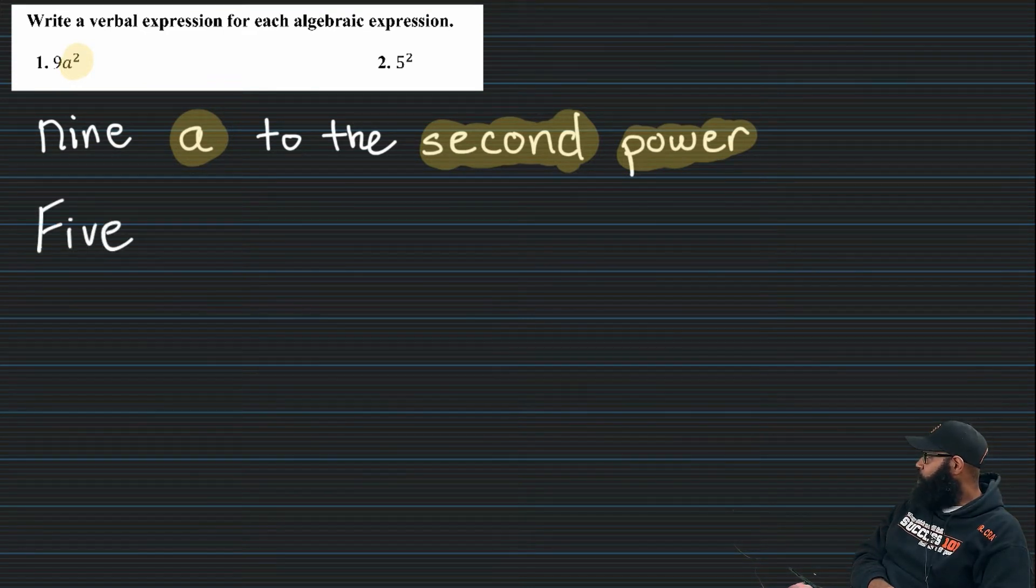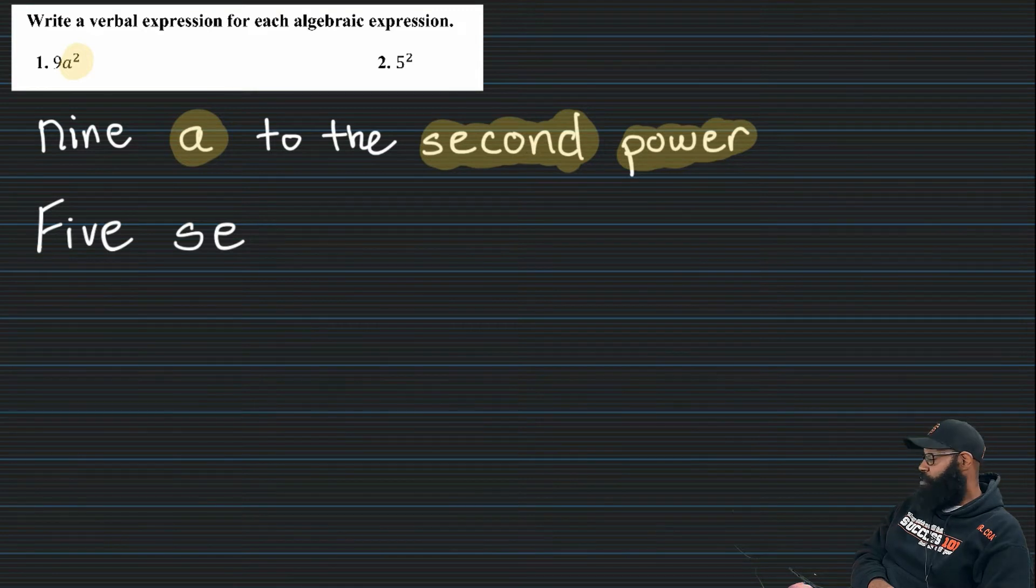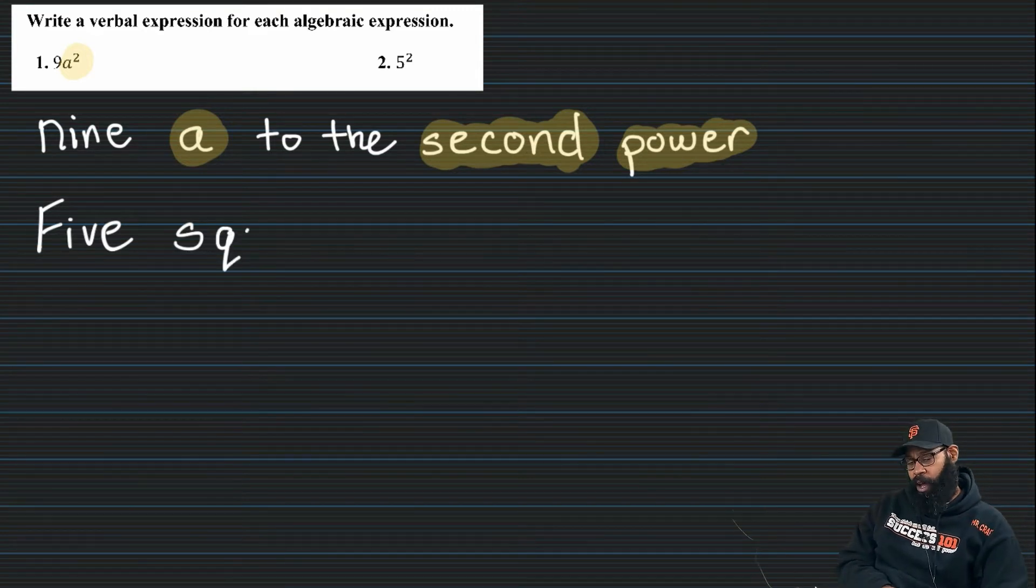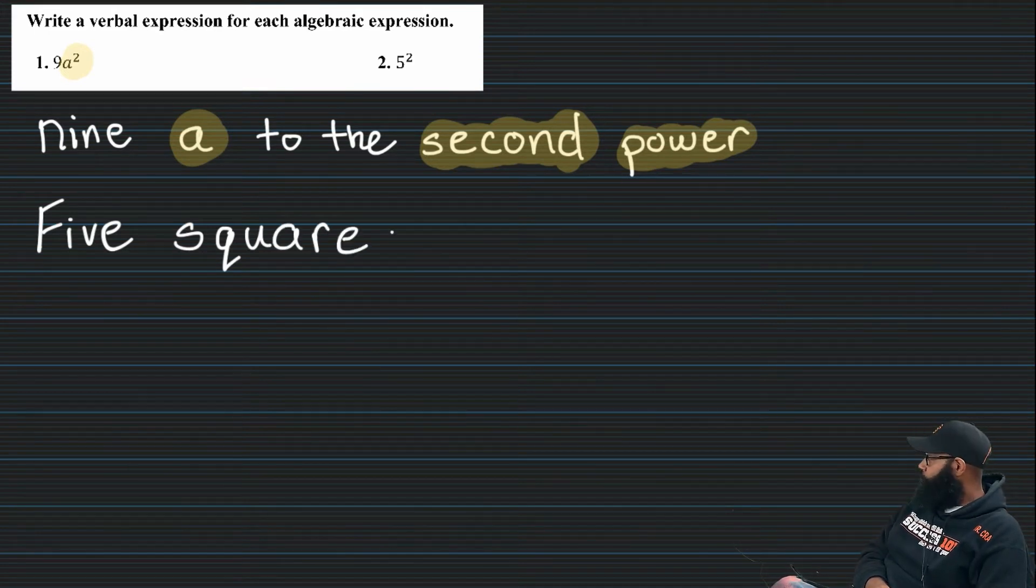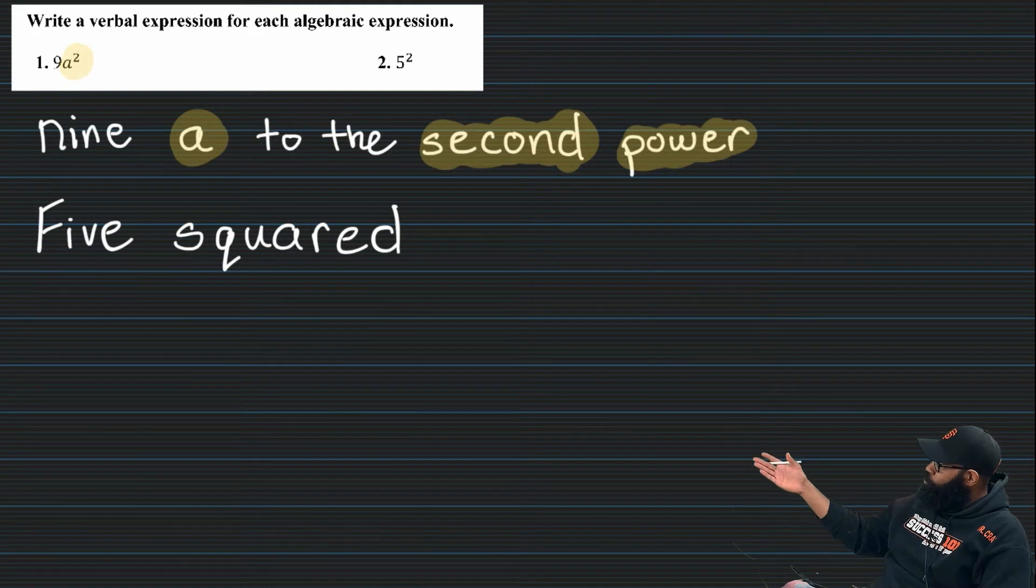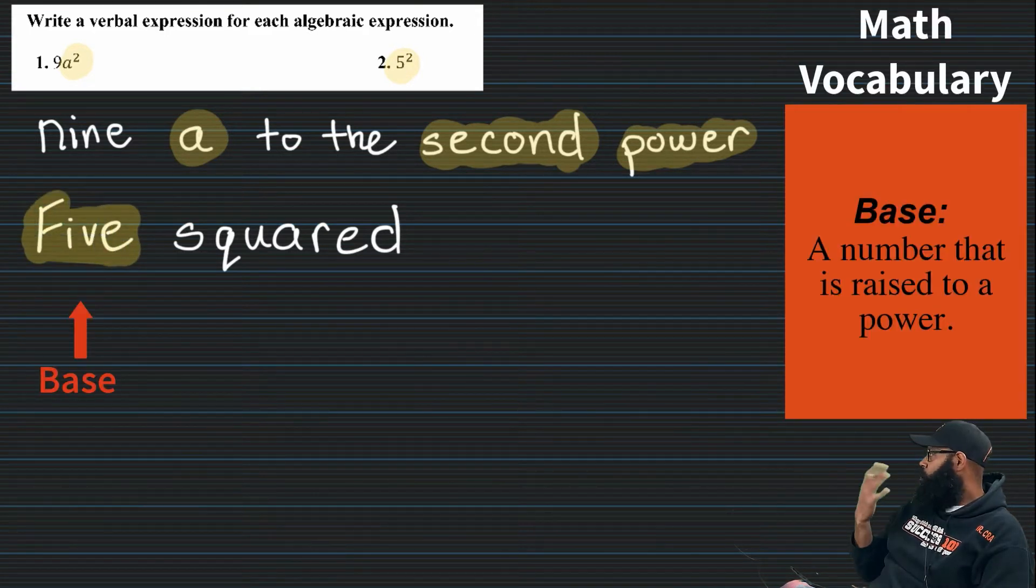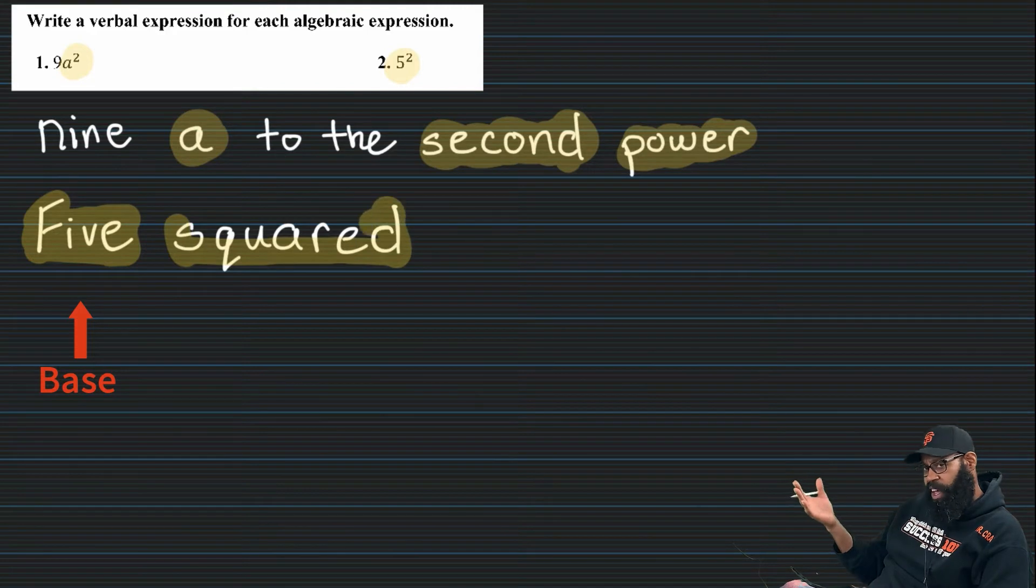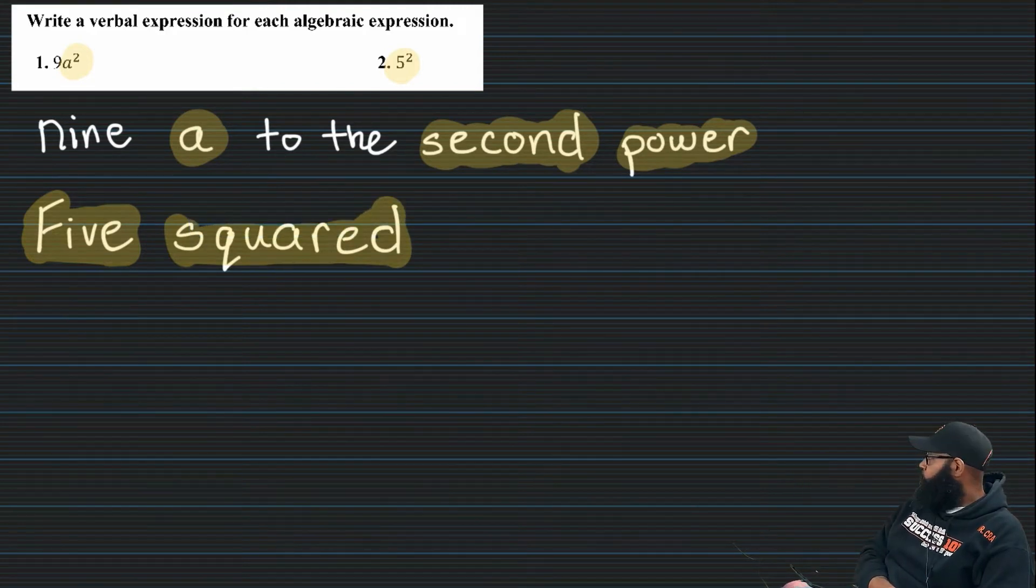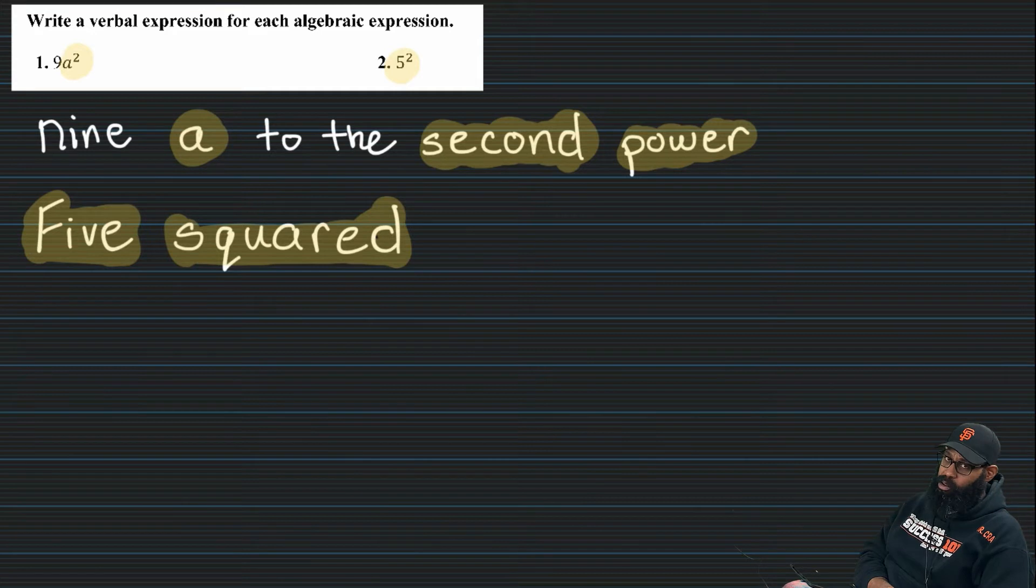Second one, number two. Five squared. And it looks like I am going to go ahead and choose. No, I'm not. I'm actually going to erase that and use the other method by which we can write an exponent. Squared.